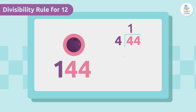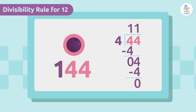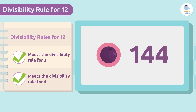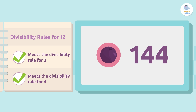Let's divide. The remainder is zero, so 44 is divisible by 4, which means our original number is divisible by 4. 144 is divisible by 4. Let's go back into the kitchen.